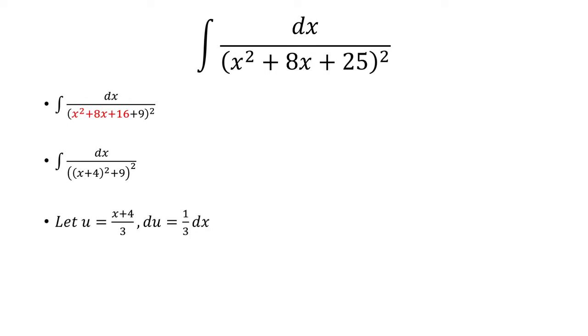Next, we're going to do a u substitution. So we're going to let u equal x plus 4 over 3. So then du is 1 third dx. And doing that, it's going to make sure that we have a 9 in front.